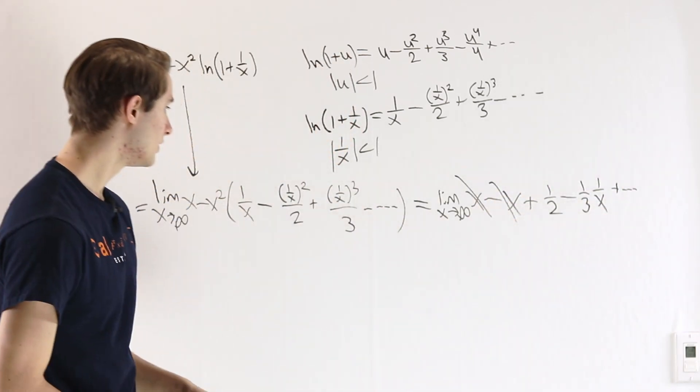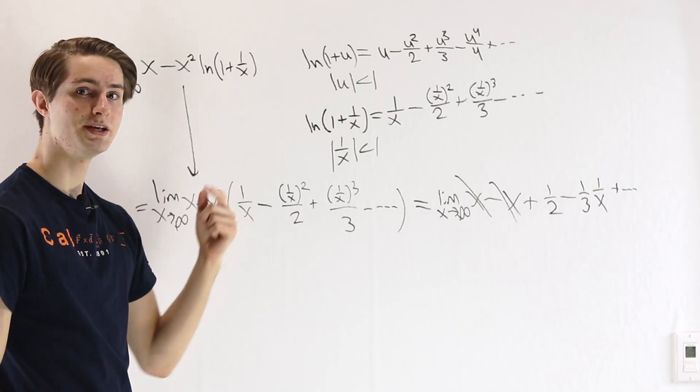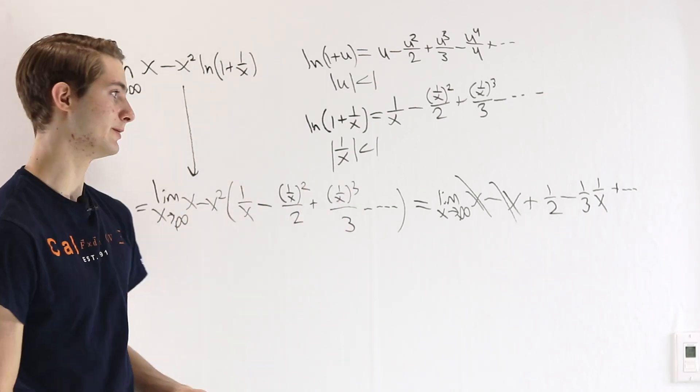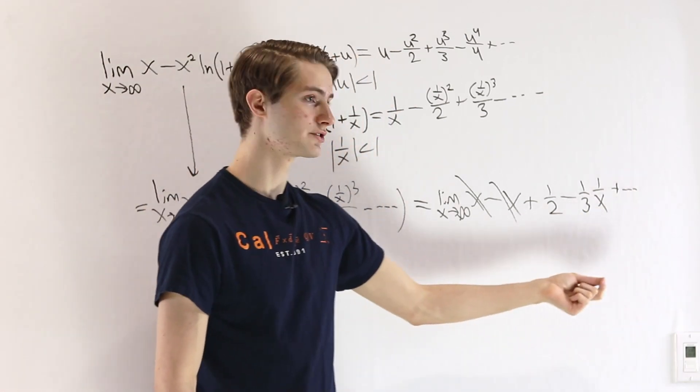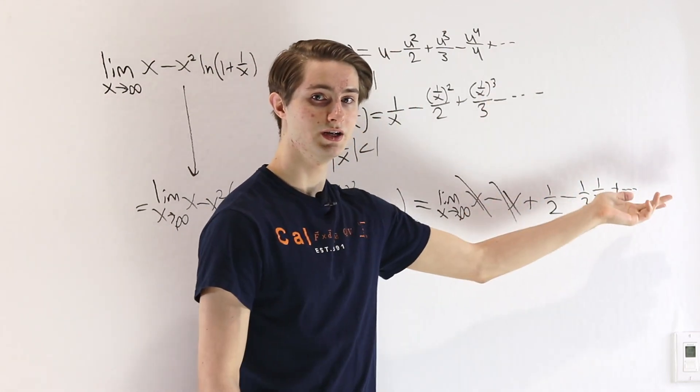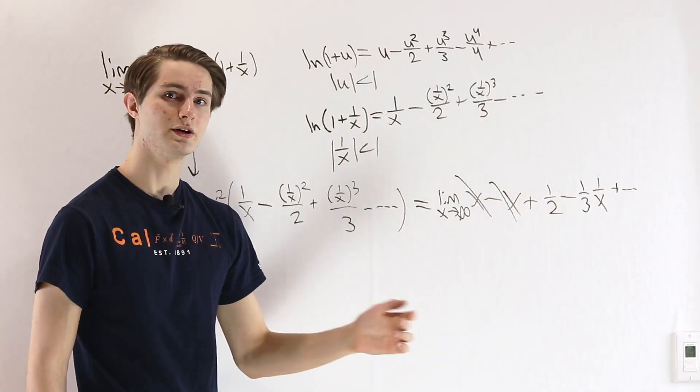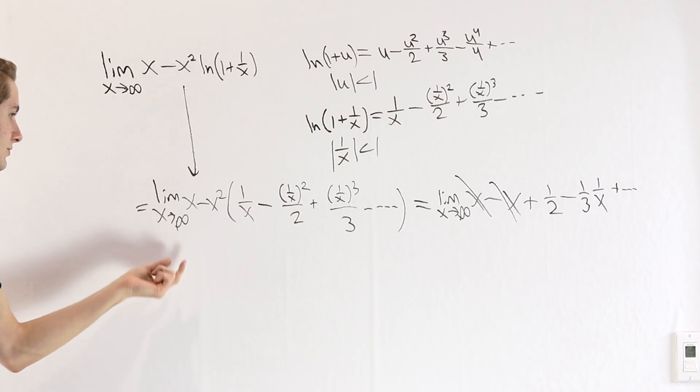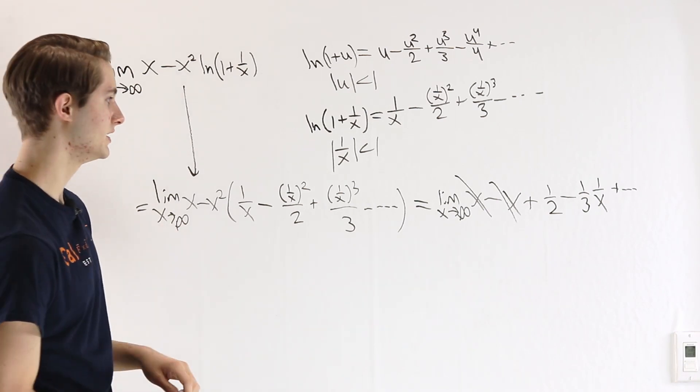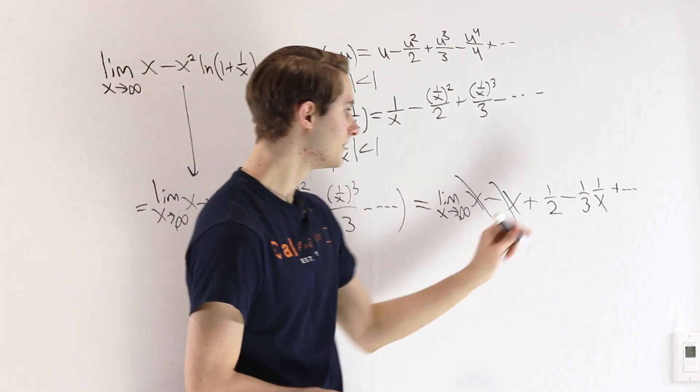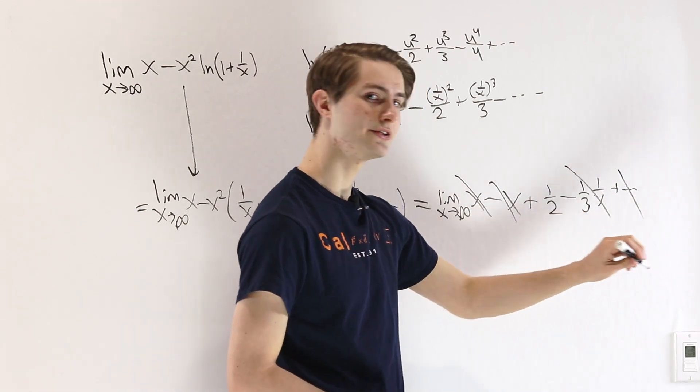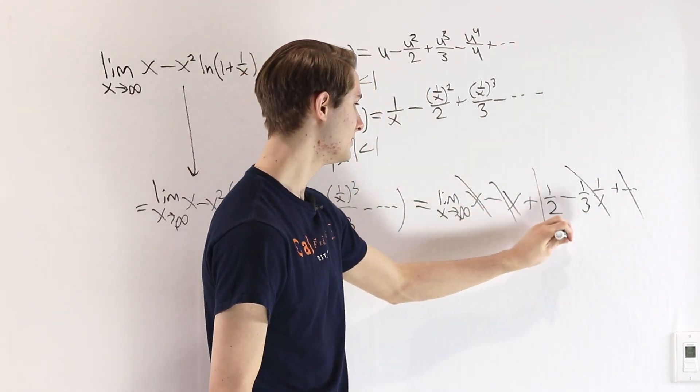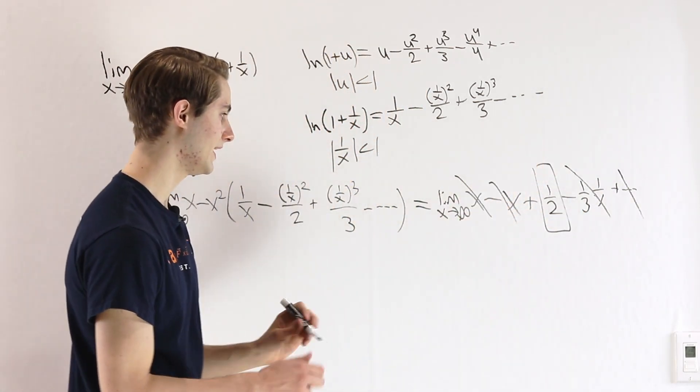As we add another term, all that's going to happen is this x in the denominator is going to get raised to higher and higher powers. Next we'll have 1 over x squared, 1 over x cubed, and so on. So those all are going to end up going to 0 as we take x approaching infinity. So really, this part equals 0, all the other terms equals 0, there's only one part left, and that is 1 half.